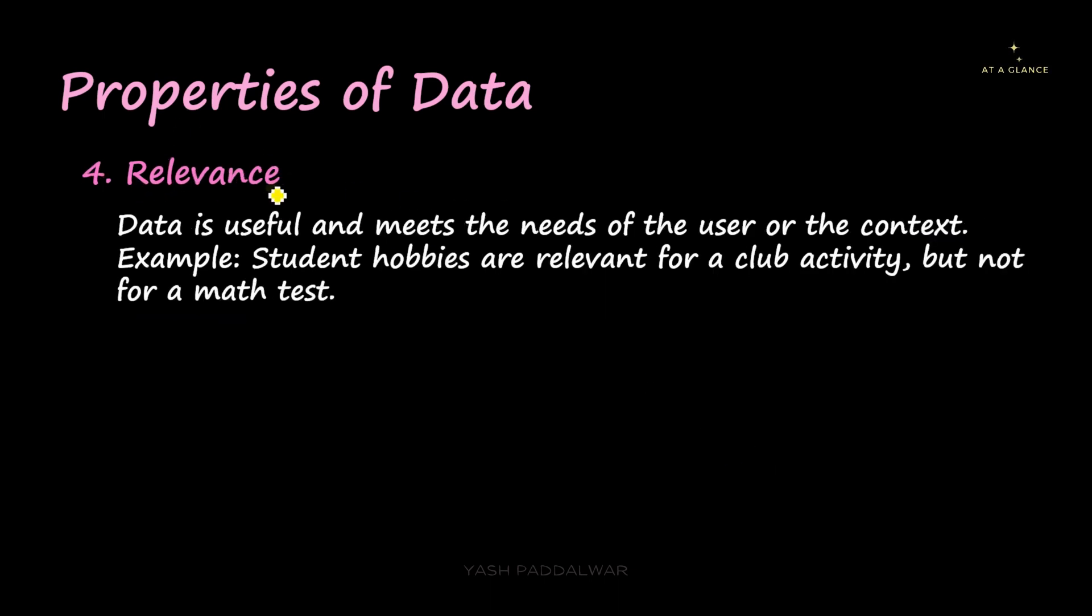Now let's have a look at the fourth property, that is relevance. Data is useful and meets the needs of the user or the context. So this means that whatever problem statement we are talking about, based on that particular problem statement, we must ensure that the data that we are going to use, that has to be relevant. The data has to be relevant and it has to be useful for that particular problem statement. Otherwise, there is no use of using that particular data.